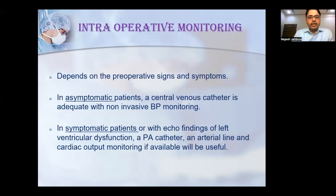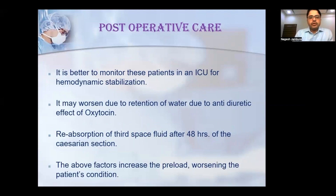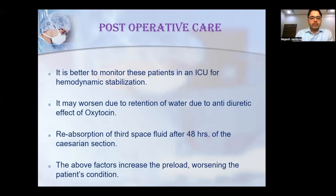Intraoperative monitoring depends upon pre-operative signs and symptoms. In asymptomatic patients, central venous pressure monitoring and non-invasive blood pressure monitoring can be used. In symptomatic patients, PA catheter or invasive arterial line monitoring is recommended. Cardiac output monitoring is helpful if available. Postoperatively, patients should be monitored in ICU for hemodynamic stabilization. The patient may worsen due to fluid retention from the antidiuretic effects of oxytocin and reabsorption of third-space fluid after 48 hours of cesarean section, increasing preload and causing sudden deterioration.